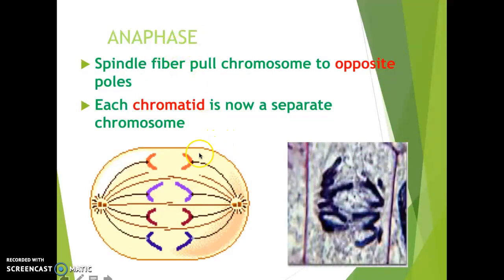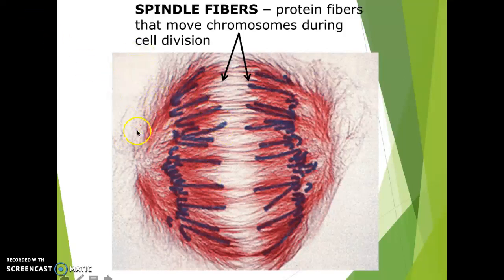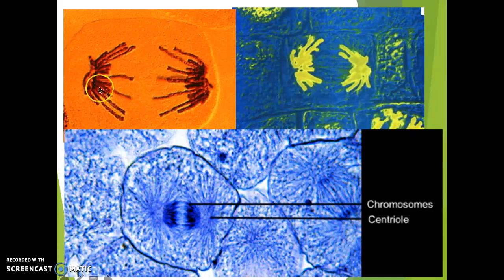The next phase is anaphase, where the spindle fibers start pulling the chromosomes apart to either pole of the cell. Each sister chromatid is now a separate chromosome — when they're separated and on their own, each becomes a single chromosome. These are protein fibers and they pretty much separate the chromosomes apart. Under a microscope it looks like two spiders on either side of the cell, with chromosomes being pulled to opposite sides.